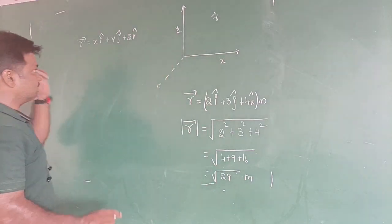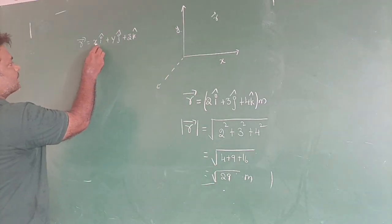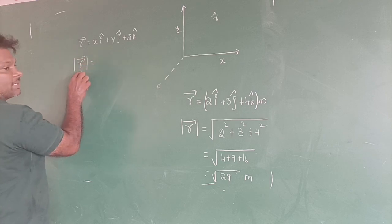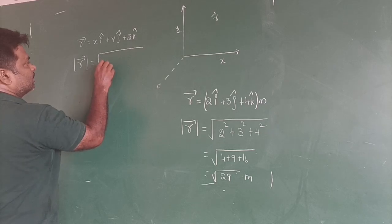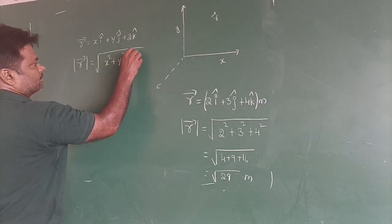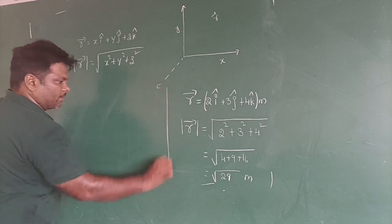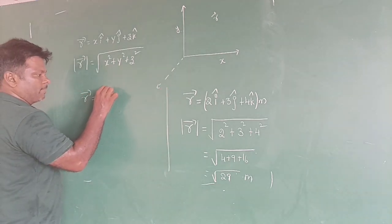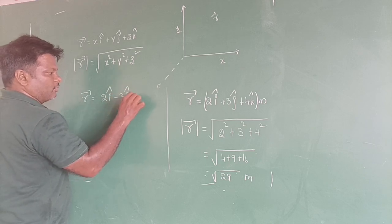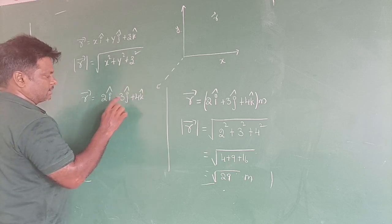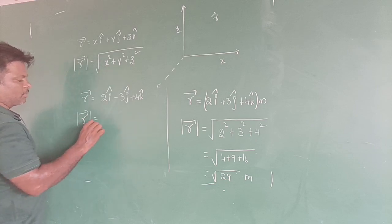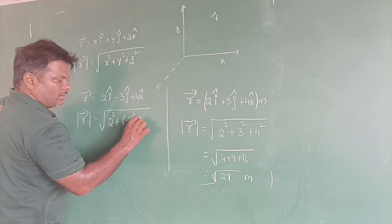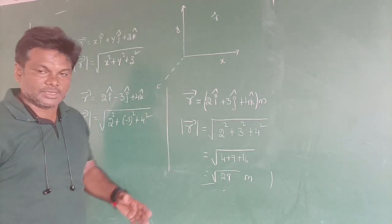The general formula: if r̄ = xî + yĵ + zk̂, then the magnitude of r̄ is equal to √(x² + y² + z²). Even if another problem is given like r̄ = 2î − 3ĵ + 4k̂, having a minus sign changes nothing — you get 2² + (−3)² + 4², and the same answer, because squaring removes the negative sign.